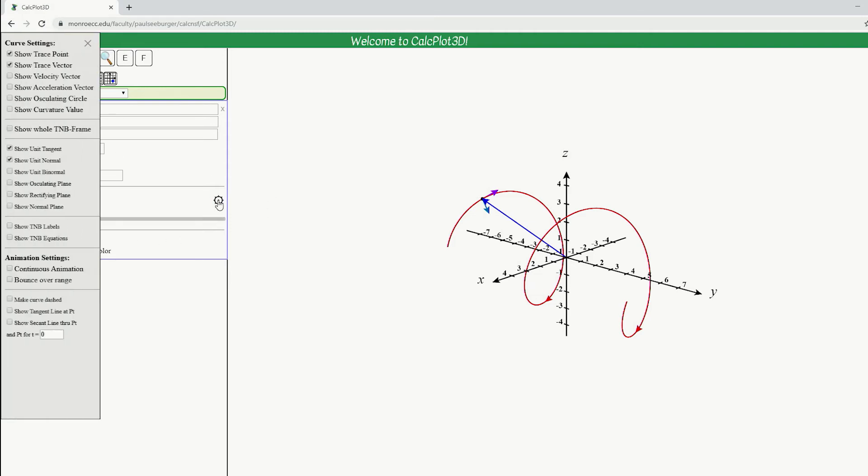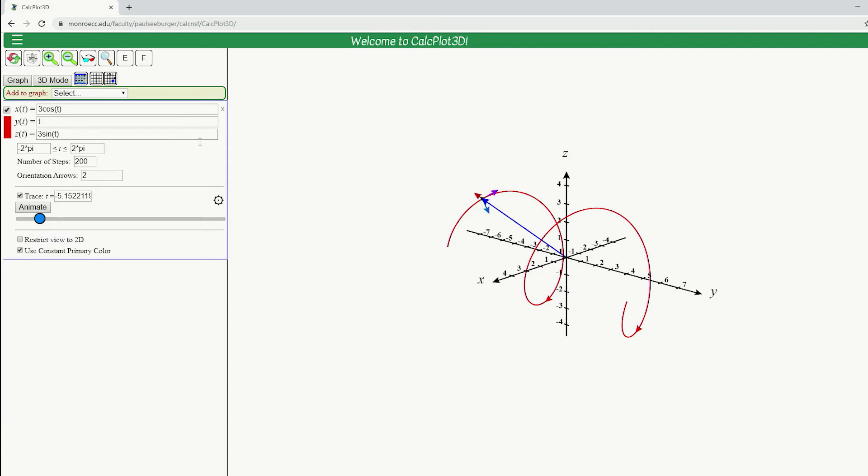All right. I'm going to go here to settings, and I'm going to check unit binormal vector. And there it is, the direction I just said it should be pointing. And we can look at that as it moves along the curve here. We can see that whole TNB frame moving as we move along that curve.